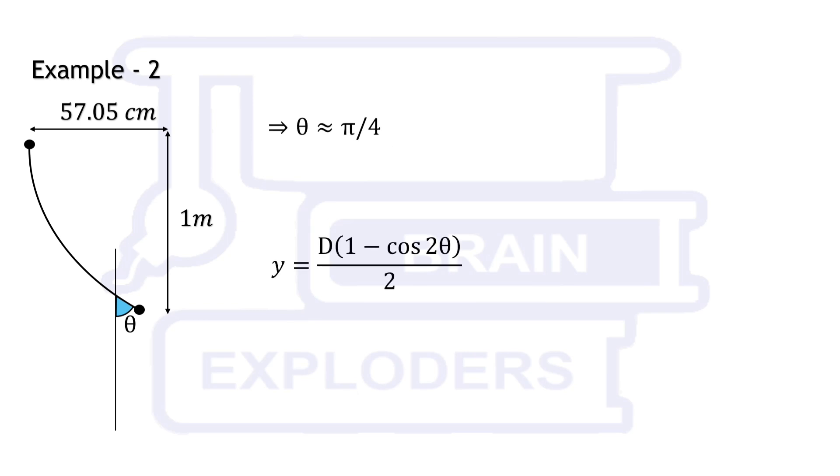Put the value of theta in any of the parametric coordinates. It gives us the value of d. From the values of theta and d we get required time equals to pi over 2 root 2d over g seconds.